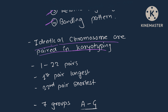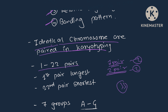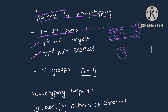Identical chromosomes are paired in karyotyping — pair one, pair two, etc., each pair containing two chromosomes, matched and given the same position. One to twenty-two pairs are present in humans. The first pair is longest in length while the twenty-second pair is shortest. These 22 pairs of chromosomes are grouped in seven groups, A to G.